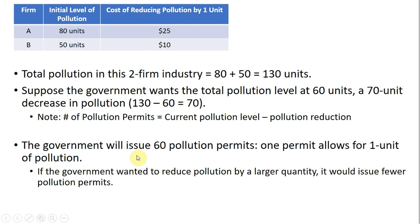The government will issue 60 pollution permits, where one permit allows for one unit of pollution. If the government wanted to reduce pollution by a larger quantity, it would just issue fewer pollution permits.